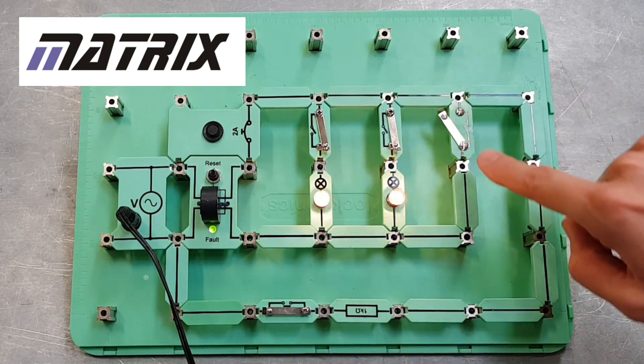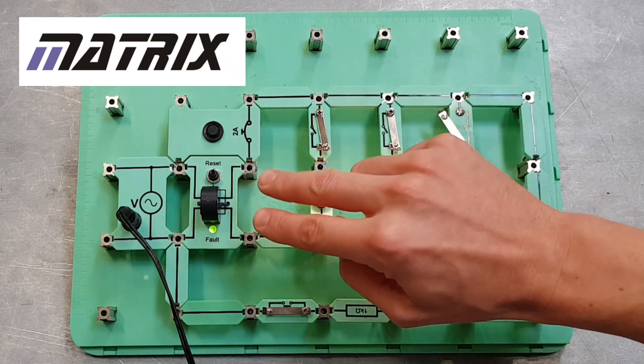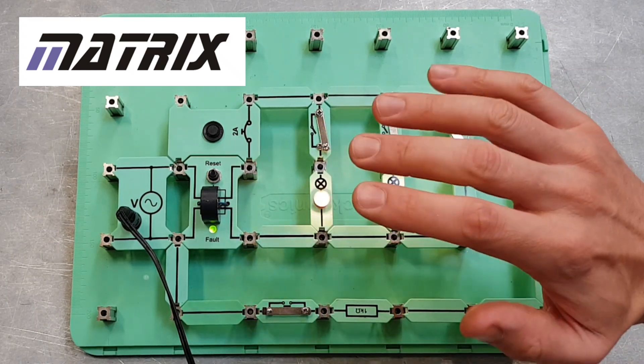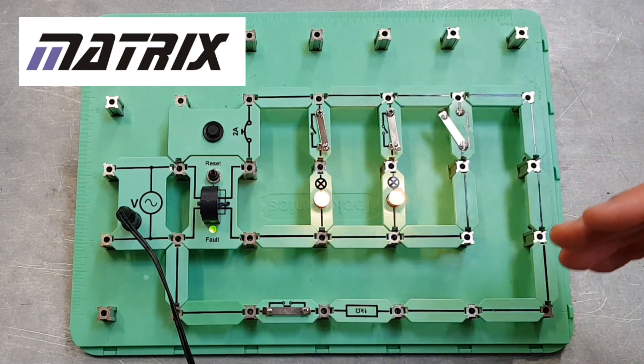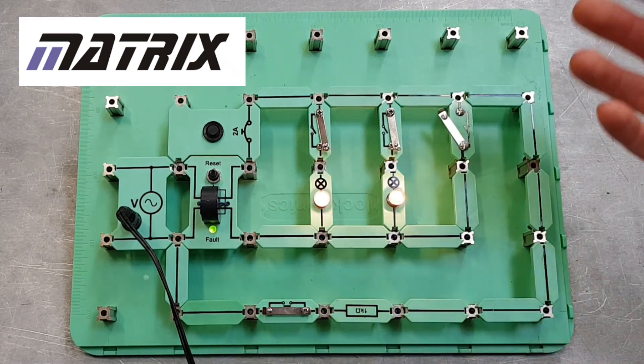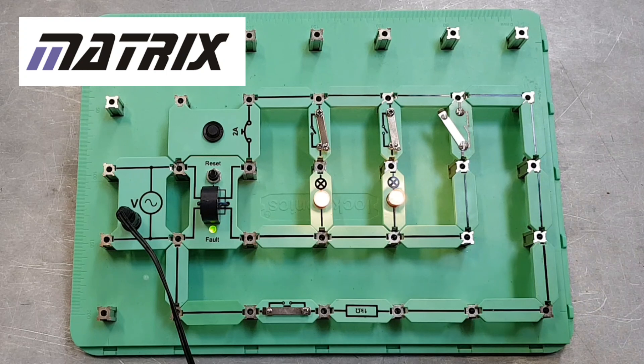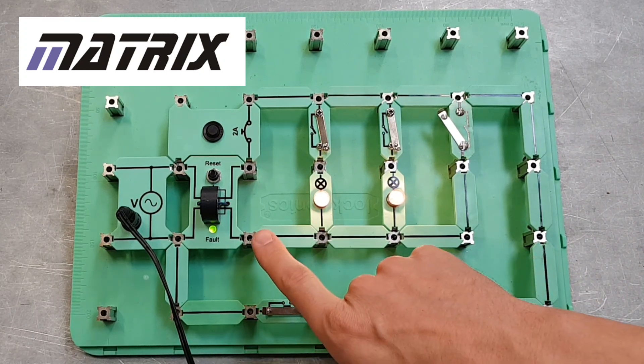It just checks that those two values are the same. If there's an imbalance, it knows that current is flowing somewhere it shouldn't be - either to earth or through a person - and then it will trip.